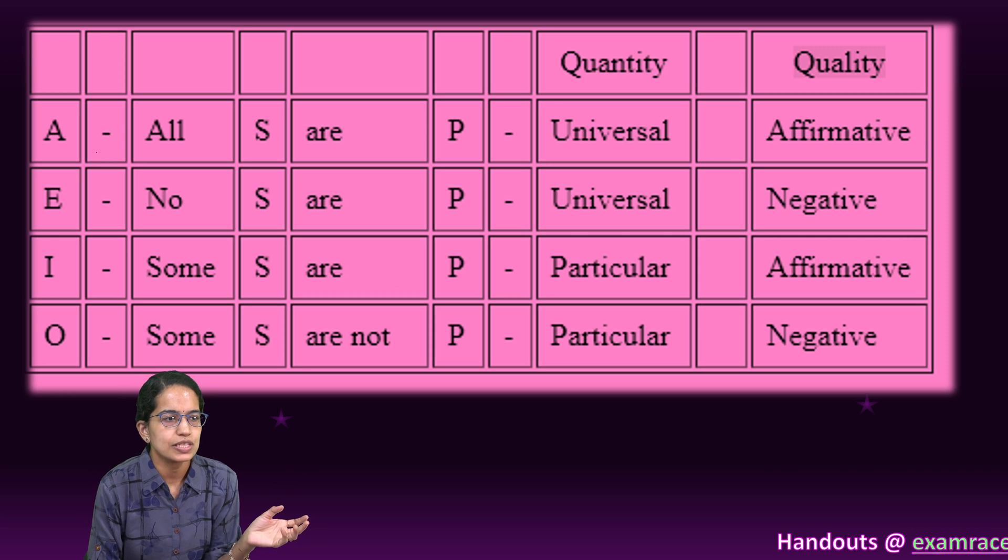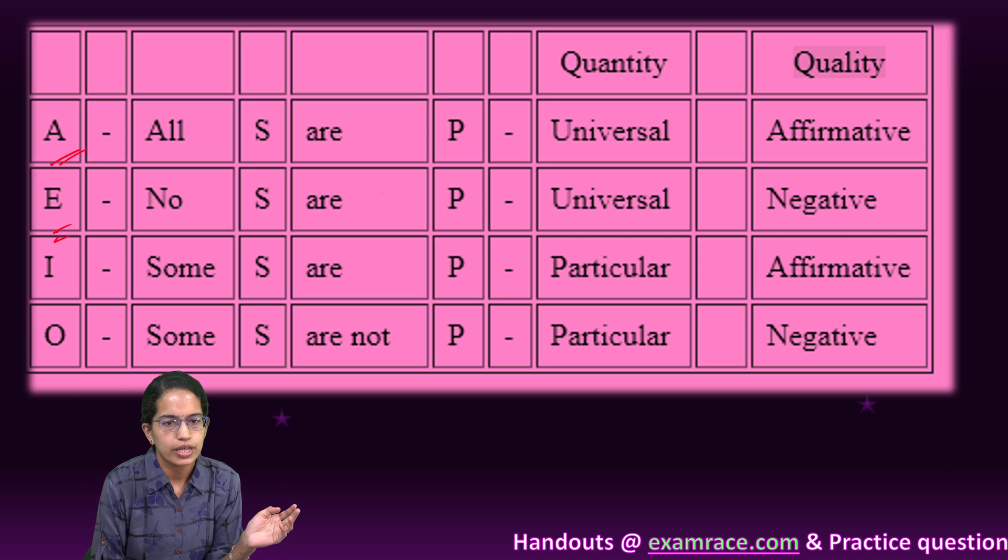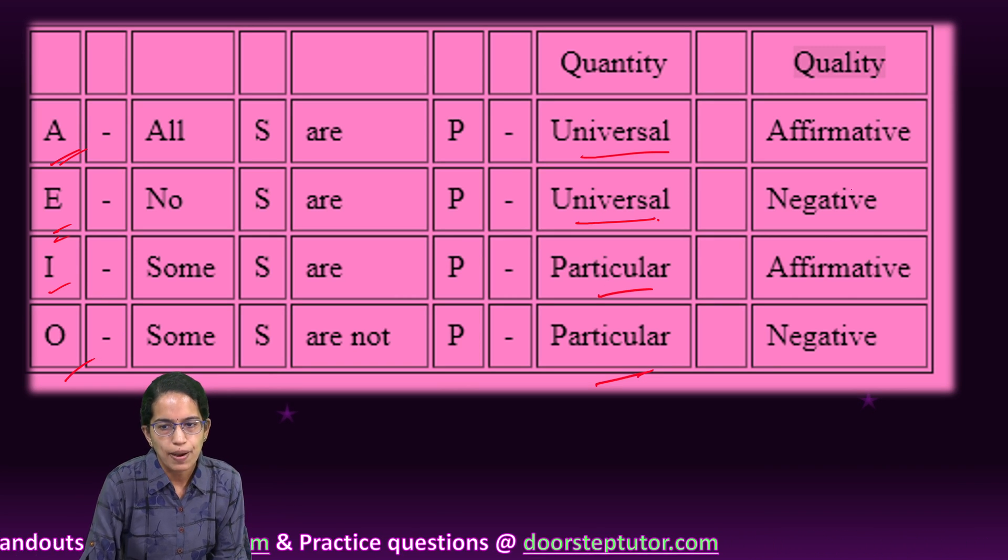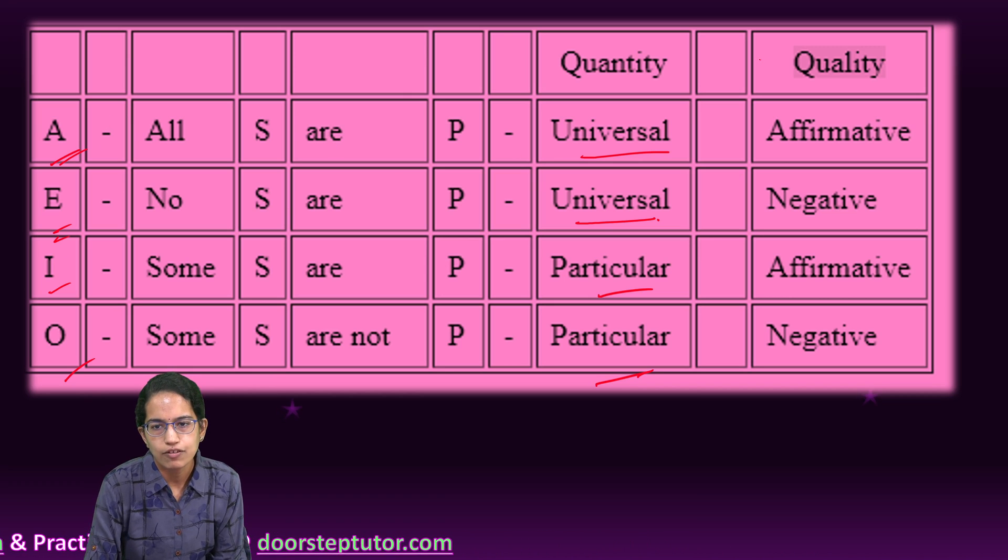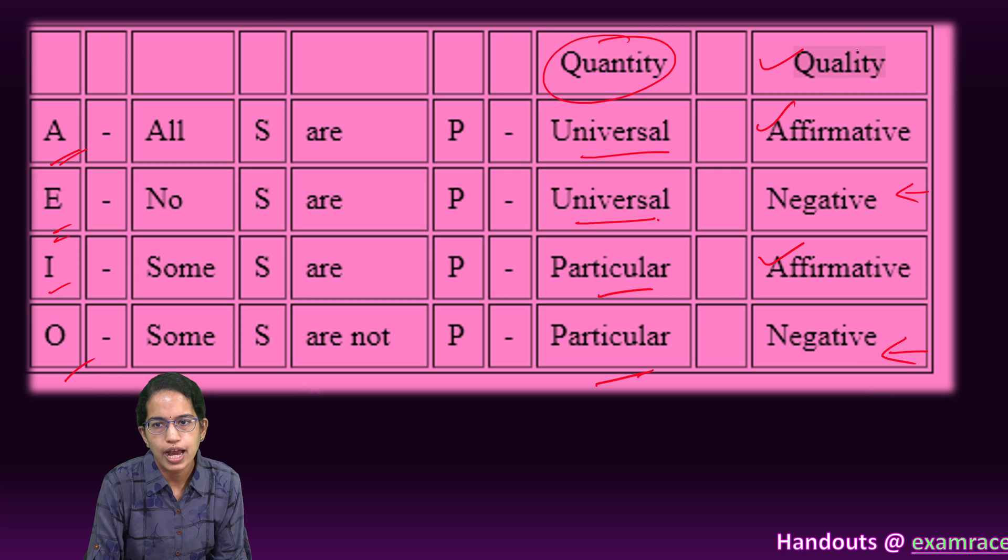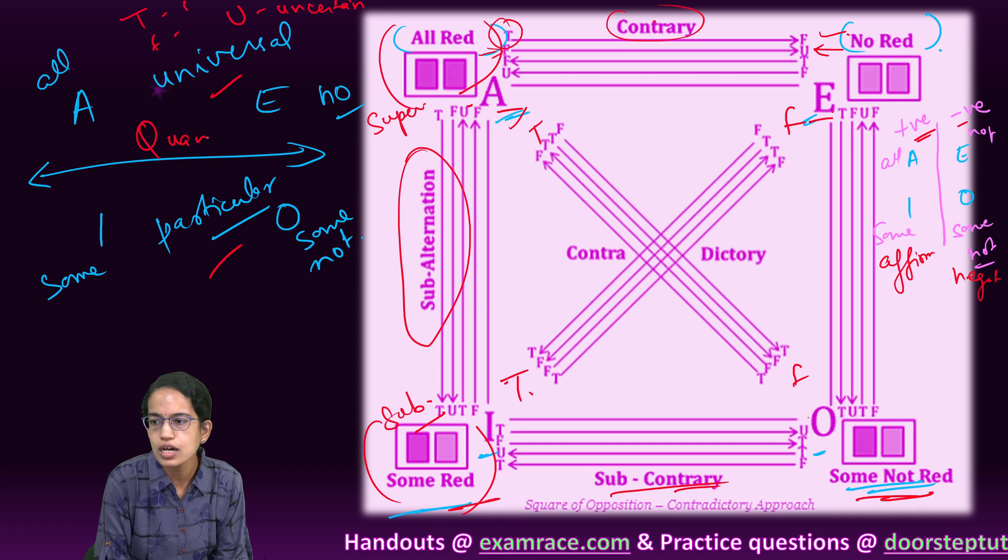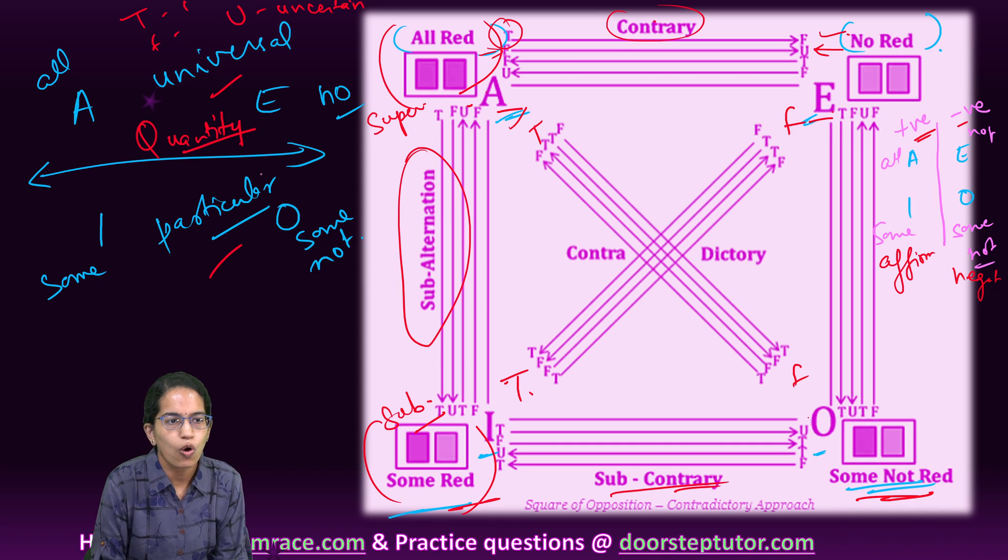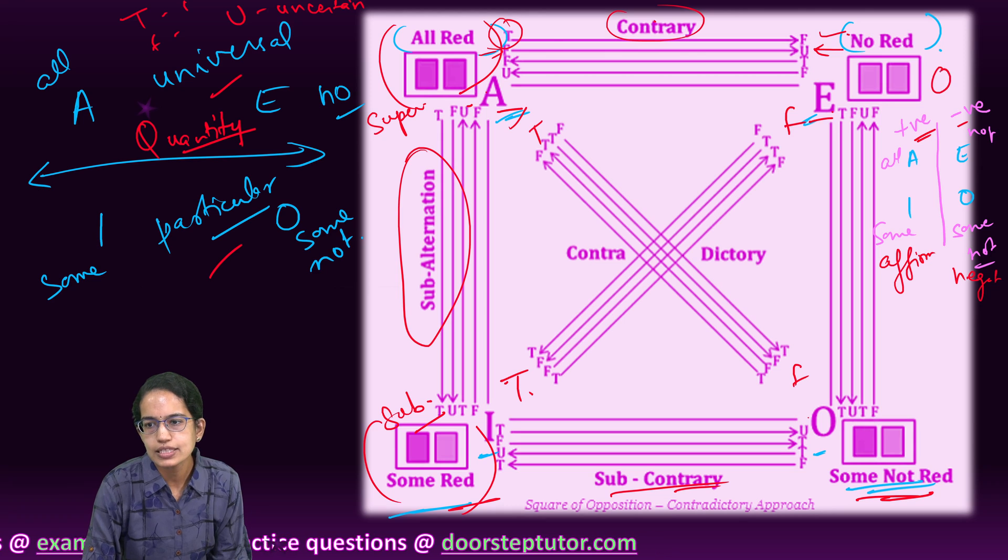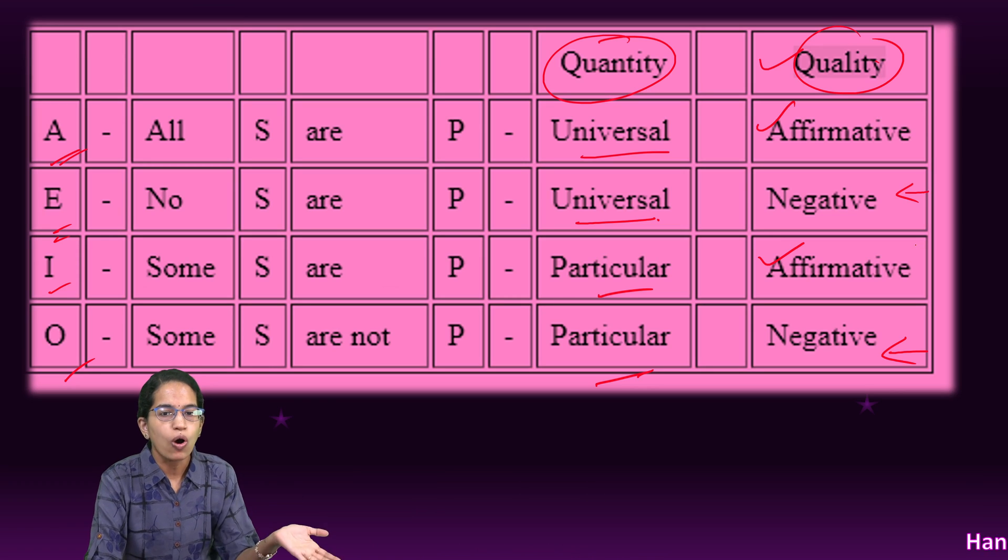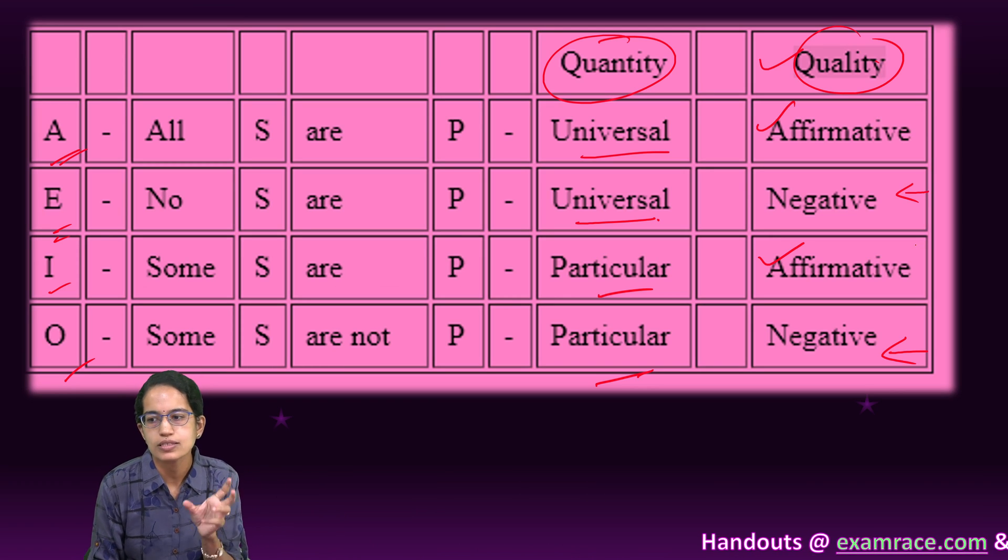Now here, as we said, all and no is universal in nature. I and O are particular in nature. But at the same time, A and I are affirmative, and E and O are negative in nature. So we have to understand the quantity and quality. Now in the previous chart that we have given, this is the quantity - how much, all or none. And this is the quality. So being affirmative or negative is the quality. All or none, universal or particular is the quantity.